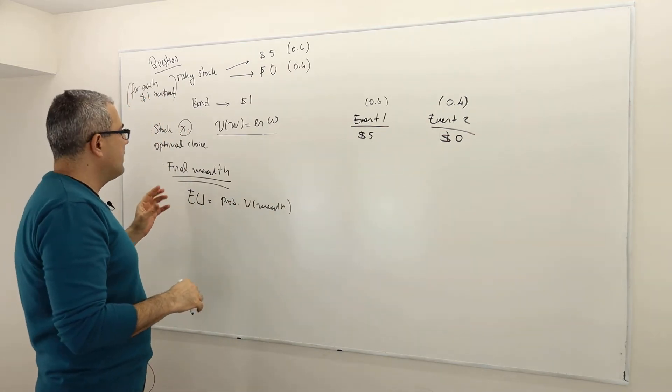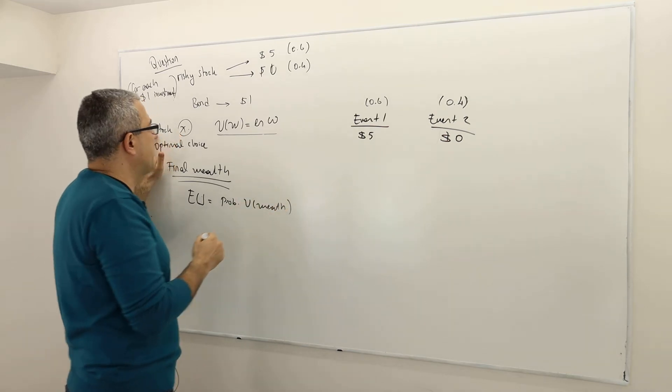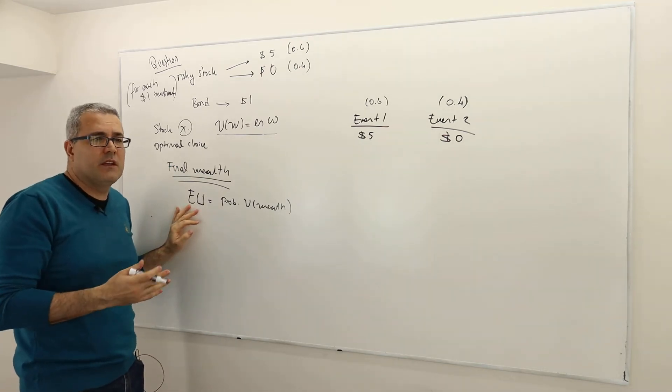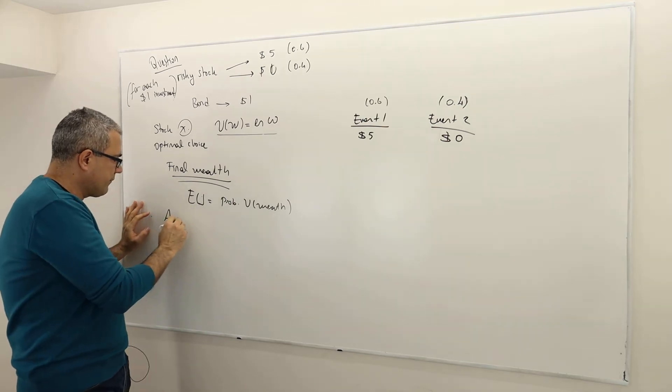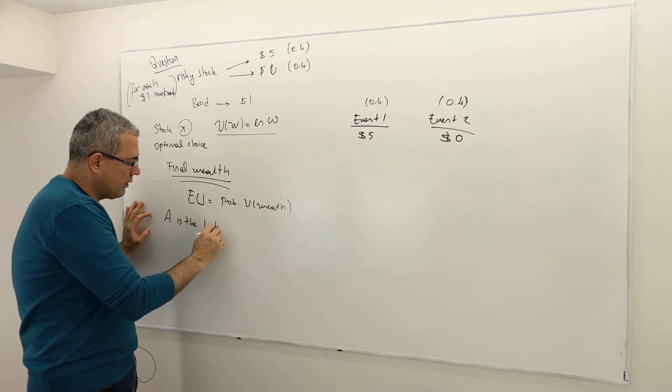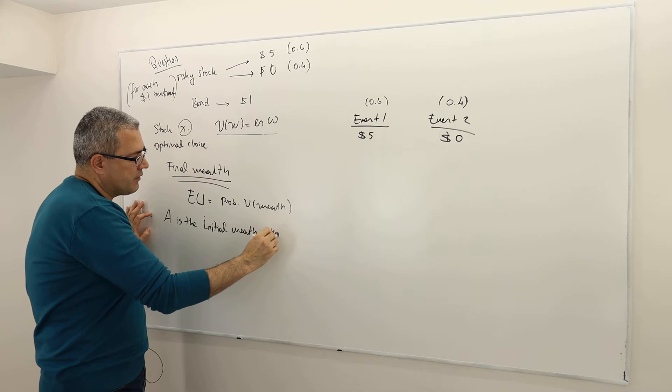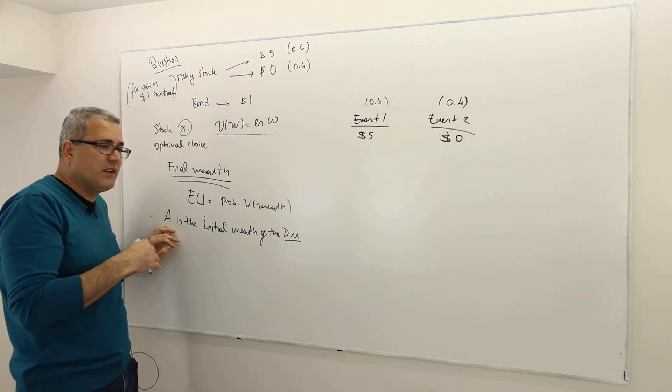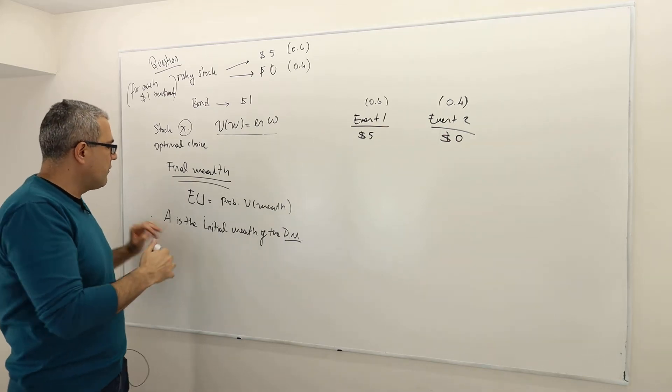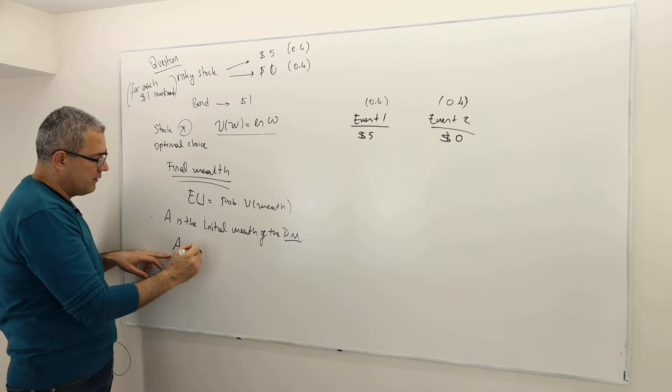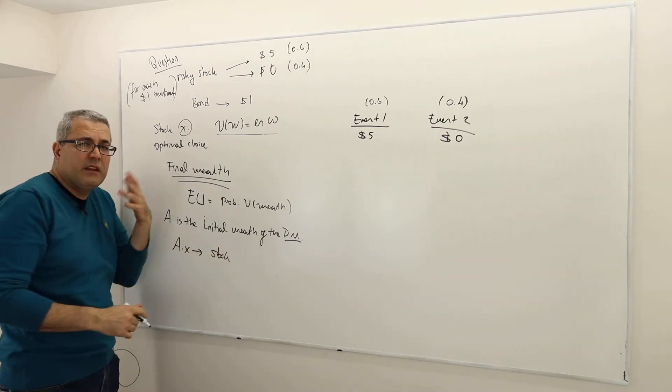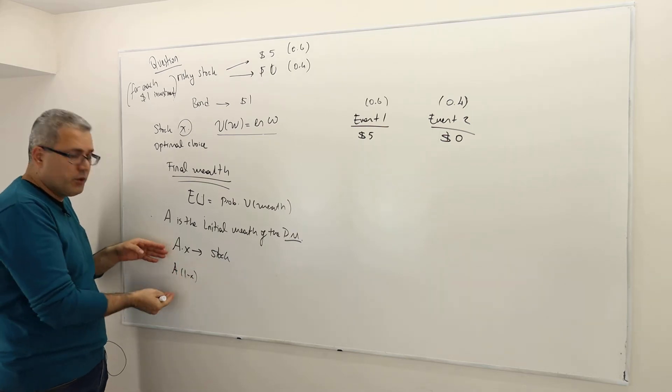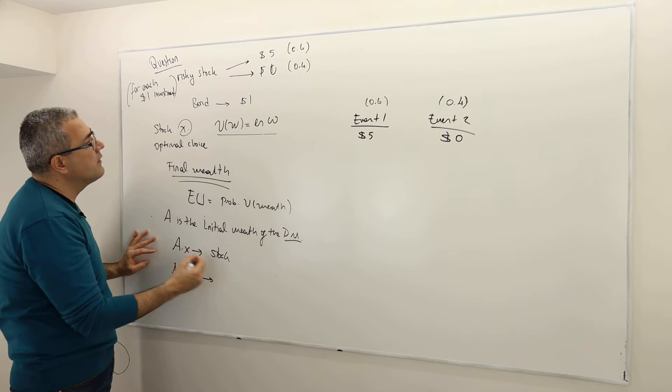What I would like to do is calculate the final wealth, the realized wealth of this decision maker under these two events. Be careful, he has a stock investment X share and 1 minus X on the government bond. So here, the question doesn't give it to us, but let's suppose A is the initial wealth of the decision maker. It may or may not play a role. Basically, that means the decision maker has initially A dollars to invest. So that means AX dollars is going to be invested on stock. You can think of A like hundred dollars, thousand dollars, a million dollars. And A times 1 minus X is invested on bond.